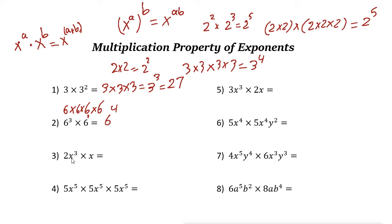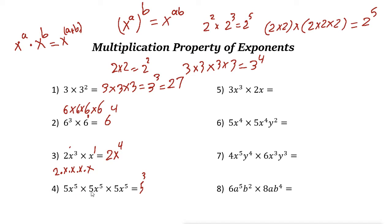Next: 2 times x to the power of 3 times x. That is 2 times x times x times x, and then another x, so we have 4 of them. The answer is 2x to the power of 4. Using the rule: x simply means x to the power of 1, so 3 plus 1 is 4. Next: 5 times 5 times 5 can be written as 5 cubed. And x to the power of 5 times x to the power of 5 times x to the power of 5 — just add the powers: 5 plus 5 plus 5 is 15, giving x to the power of 15.